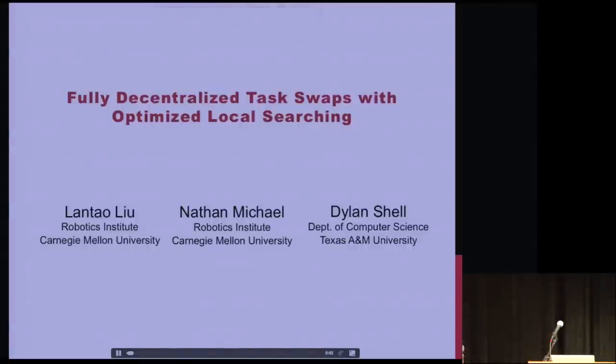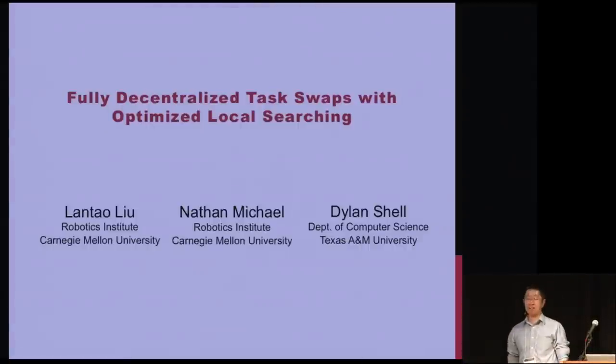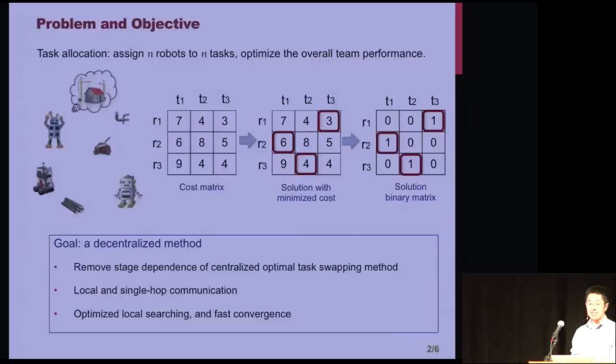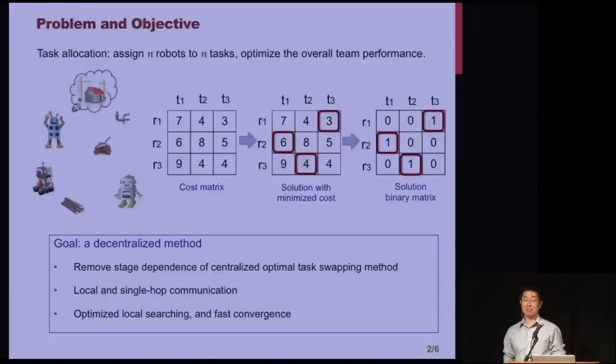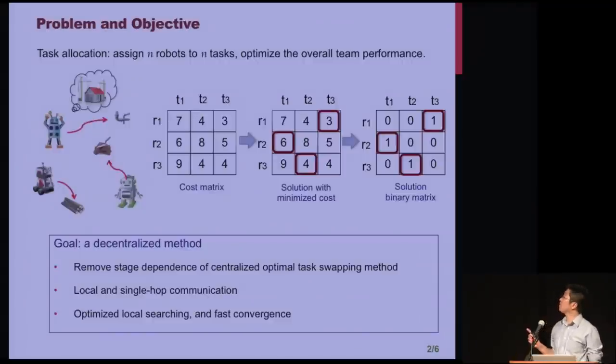Hello, everyone. I'm Lantao Liu, and this is my talk, Fully Decentralized Task Swaps with Optimized Local Searching. So, we consider the classic task allocation problem that assigns n robots to n tasks, for which the final solution is a one-to-one mapping. This form of a task allocation can be represented with a table or a matrix, where the row indices are robots and the column indices are tasks. The optimal solution is highlighted in red circles, and we can simplify the final solution with a matrix with only binary values, as shown in the right-most matrix.